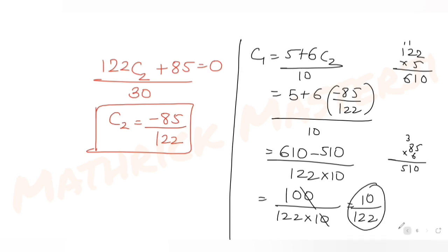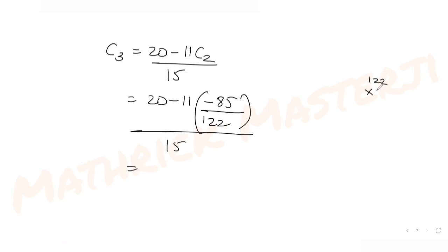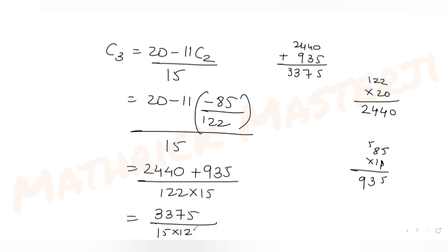For c3 = (20 − 11c2) / 15, substituting c2 = −85/122: numerator = 20·122 + 11·85 = 2440 + 935 = 3375. So c3 = 3375 / (15·122). Cancelling 15 from 3375 gives 225, so c3 = 225/122.